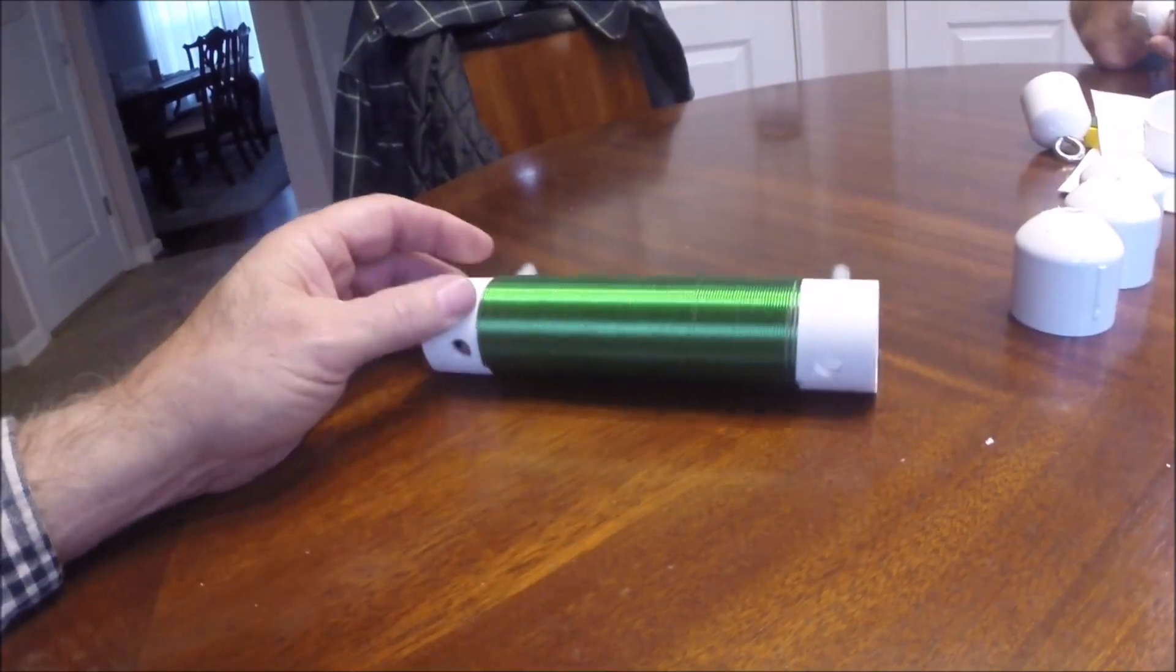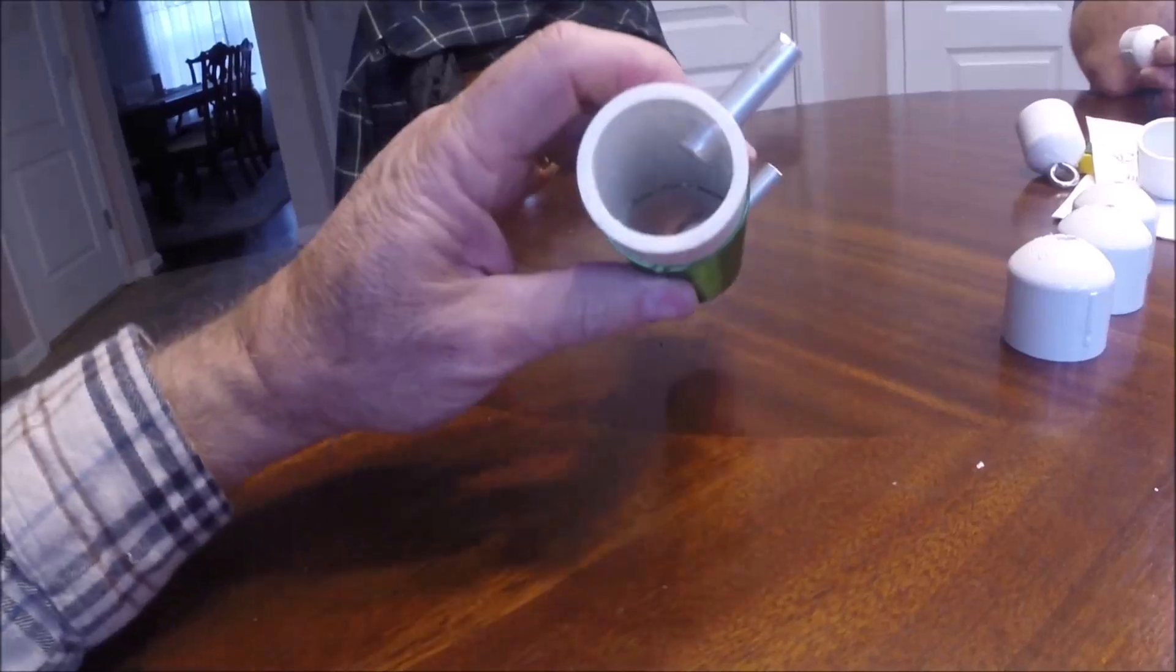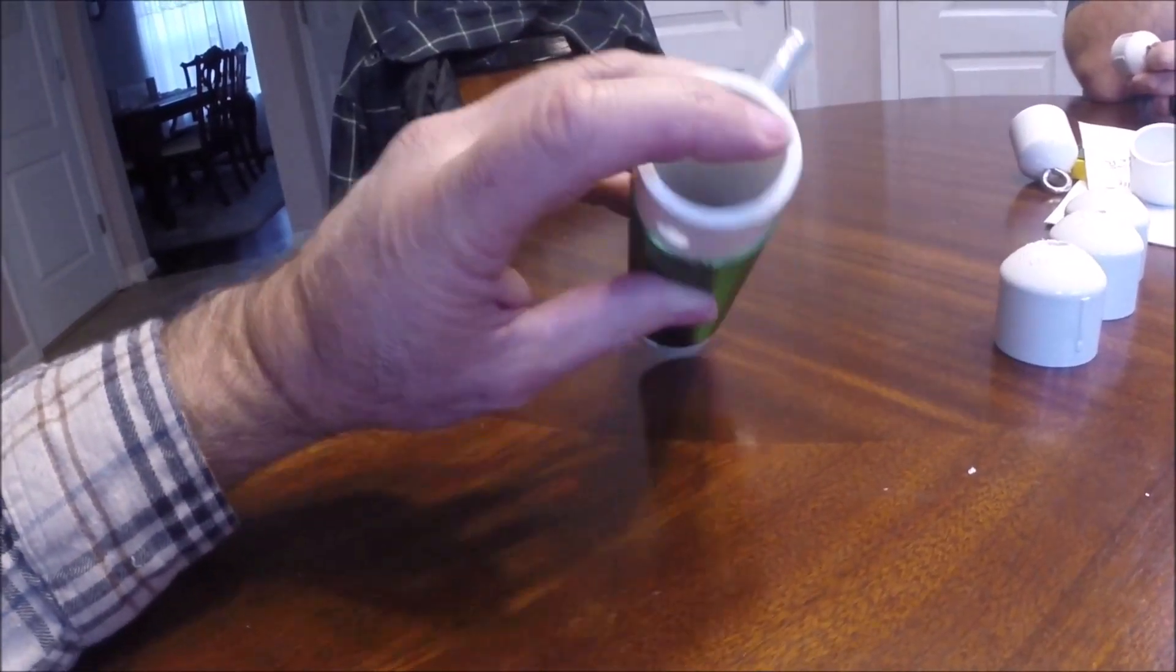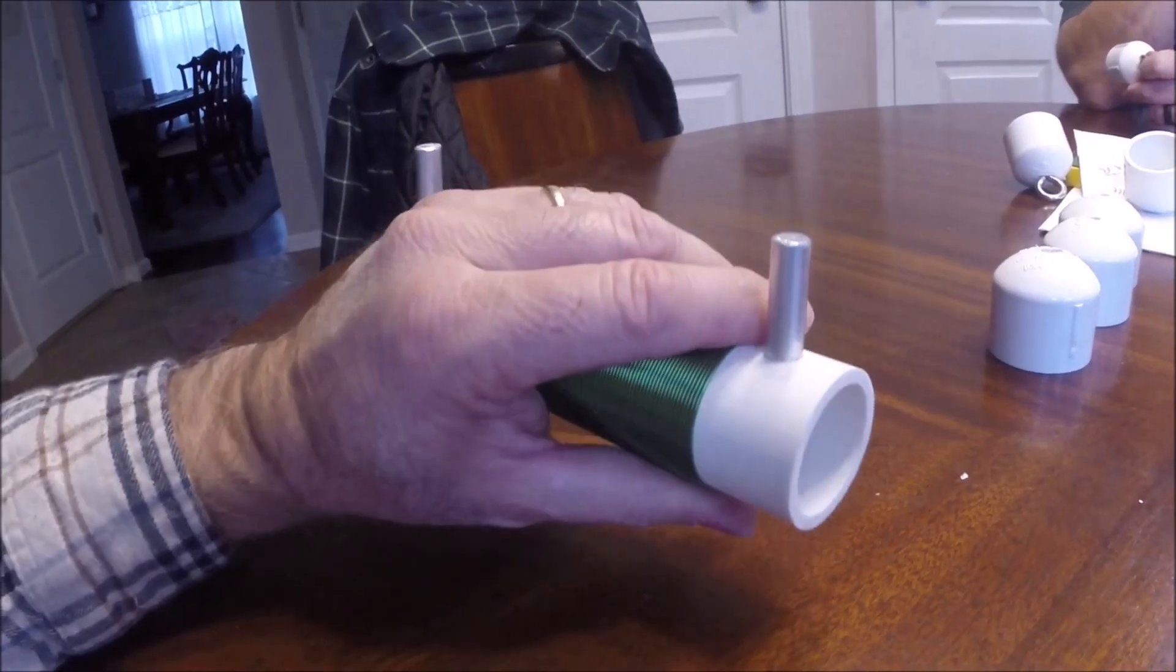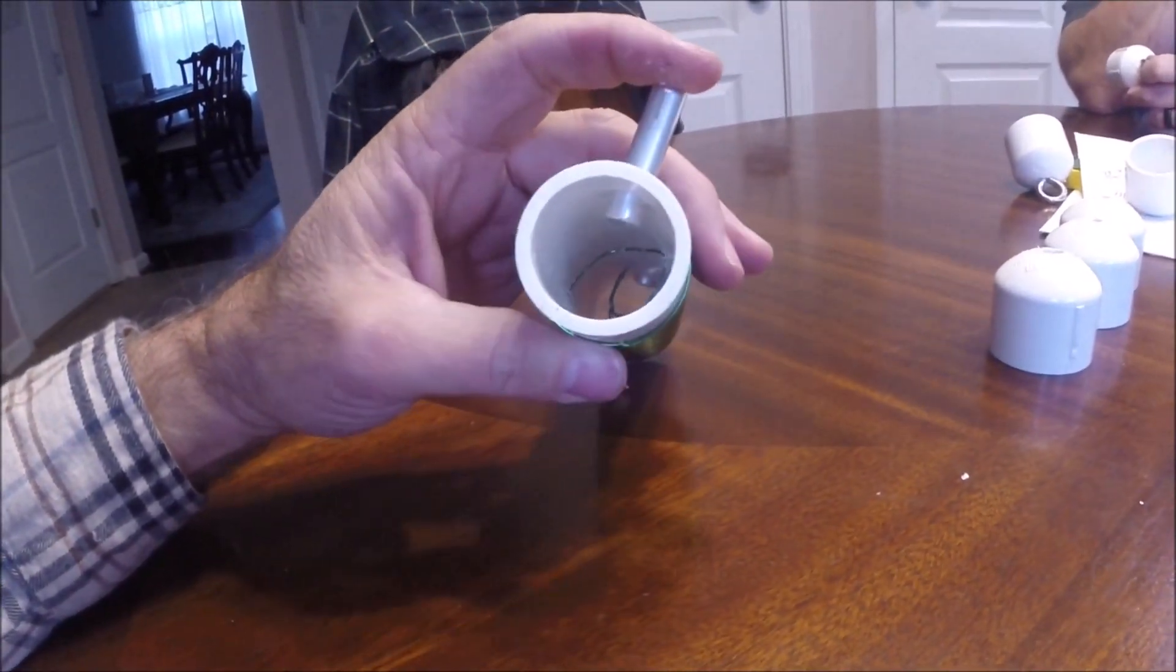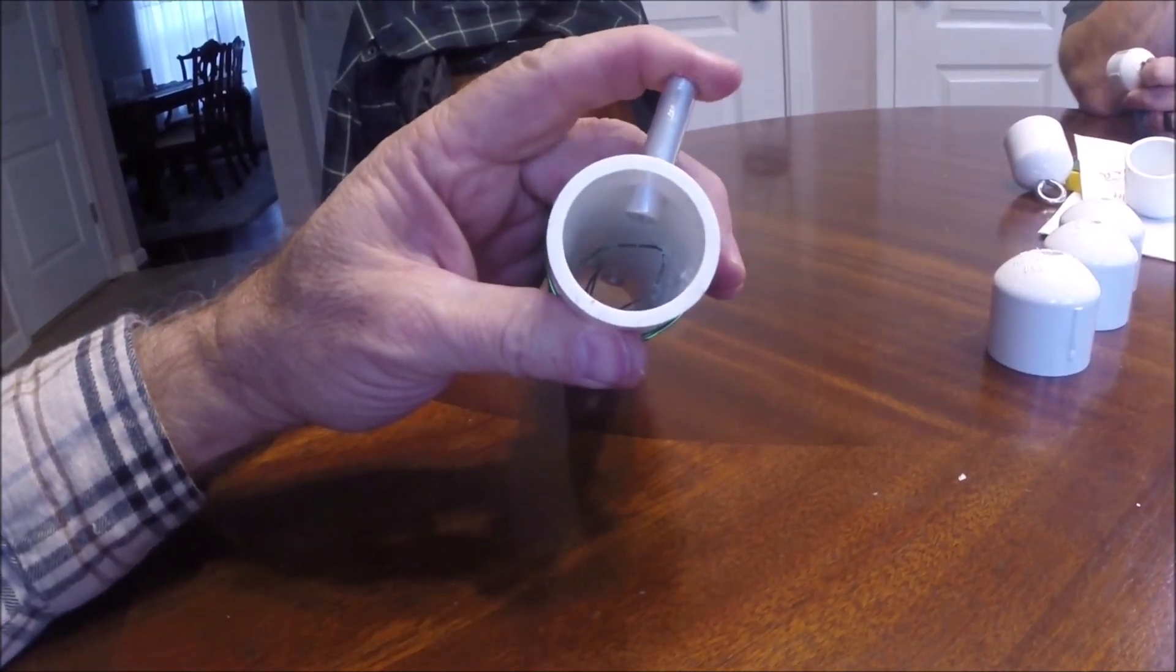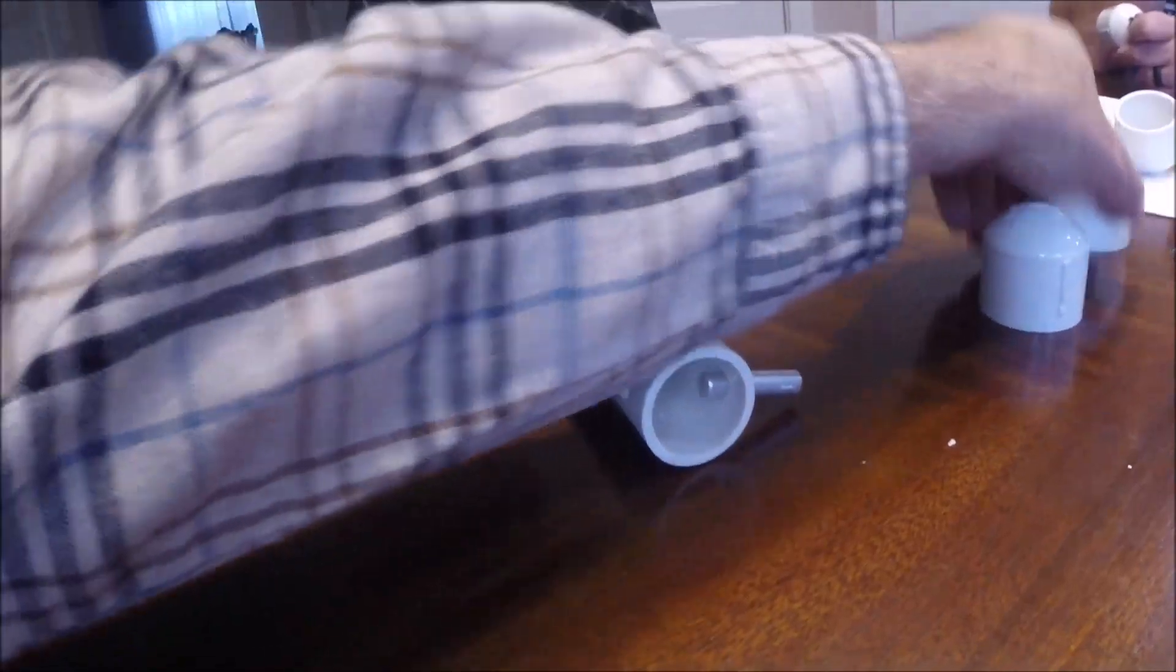I took his coil design and rather than use the stainless steel hardware, I wound the coils, put the end of the coil wire inside the PVC pipe and I drilled two holes, three eighths inch holes and I got some three eighths aluminum rod. So what I'm going to do is this aluminum rod, I have PVC caps here.